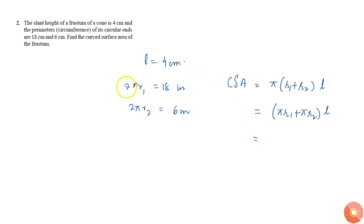From the given values, πr₁ = 9 and πr₂ = 3. This becomes (9 + 3) × L = 12 × 4 = 48 cm². Therefore, the curved surface area is 48 cm².